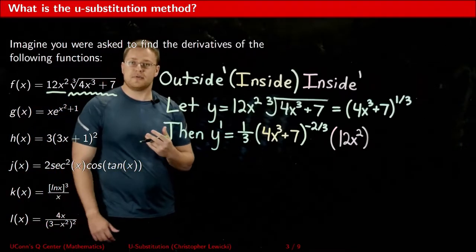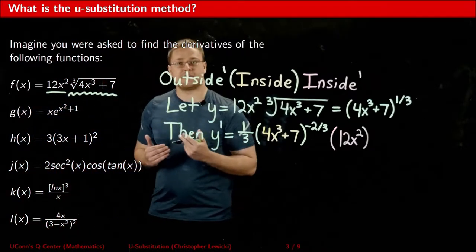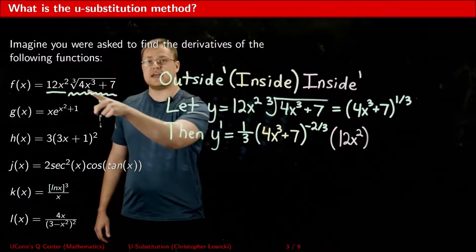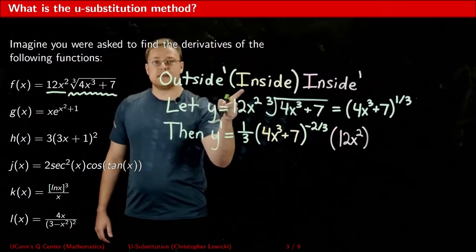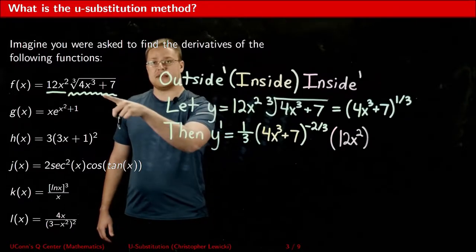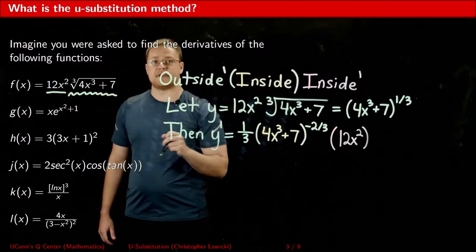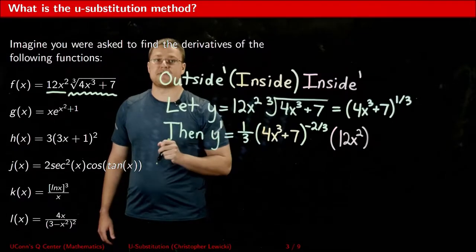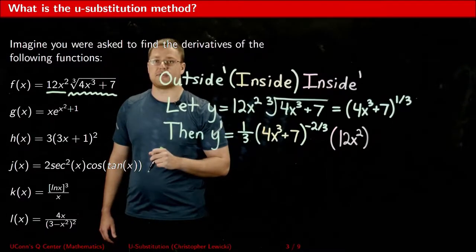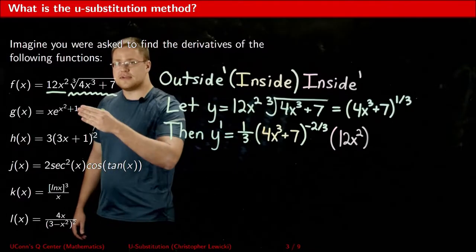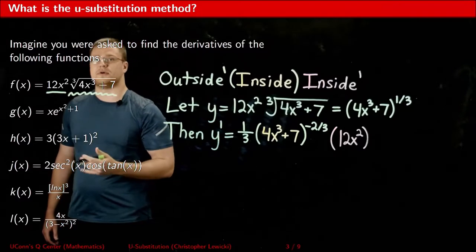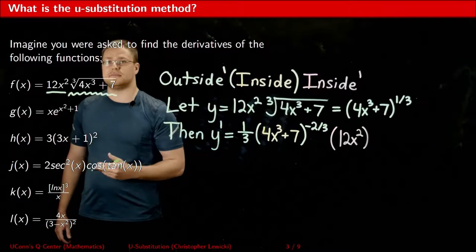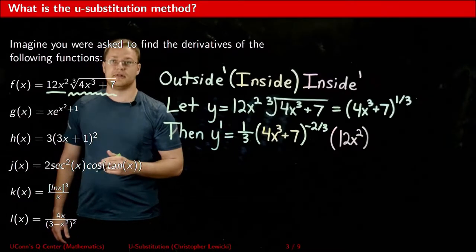When you were taught the chain rule, it was likely explained like this: you take the derivative of the outside function — in this case the cube root — keep the inside function the same — in this case 4x cubed plus 7 — and then multiply by the derivative of the inside function, in this case 12x squared. These next three examples also need both the product rule and the chain rule, whereas the last two need both the quotient rule and the chain rule.